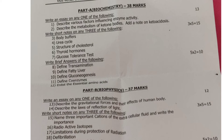Next, moving on to short notes. They will give 5 short notes — questions 3 to 7 — and out of those 5 you have to answer only 3, so 3 into 5 equals 15 marks. Question 3: Body buffers. Question 4: Urea cycle. Question 5: Structure of cholesterol. Question 6: Thyroid hormones. Question 7: Glucose tolerance test. Answer any 3 of these 5 questions.